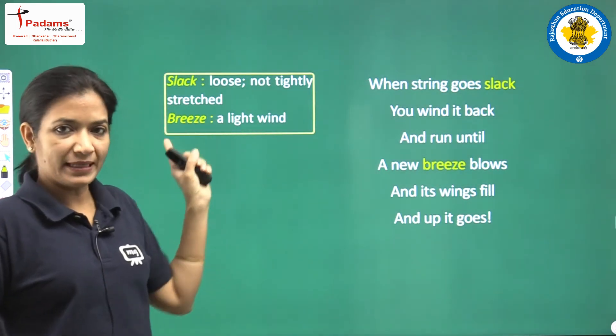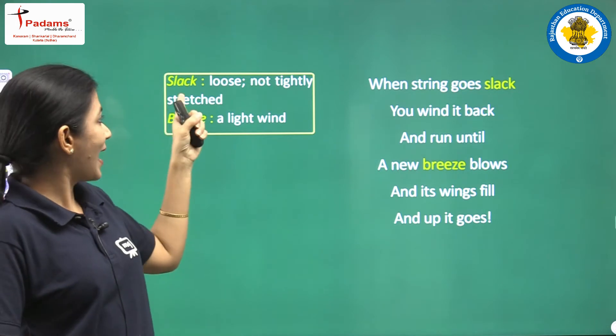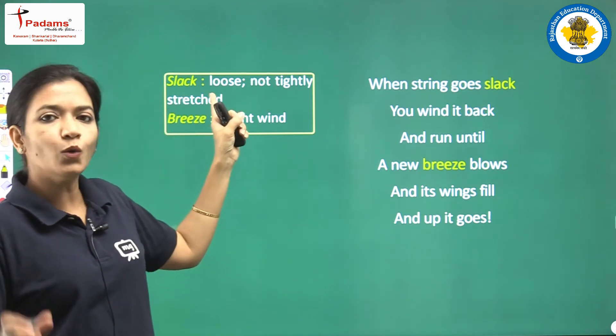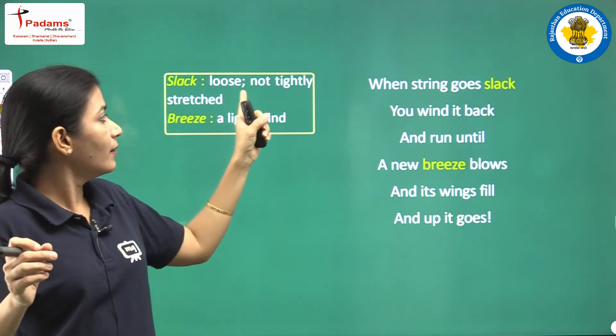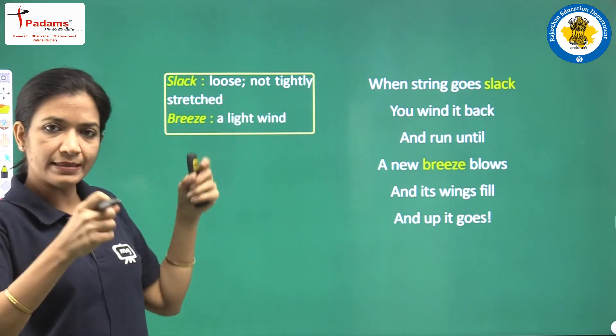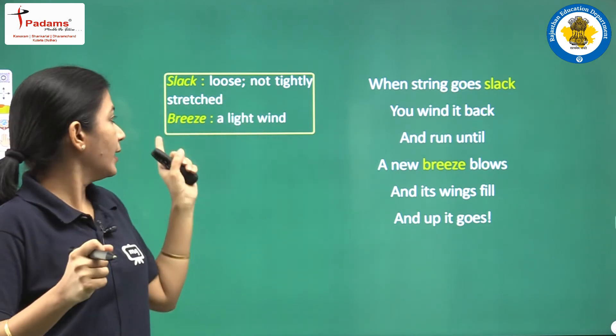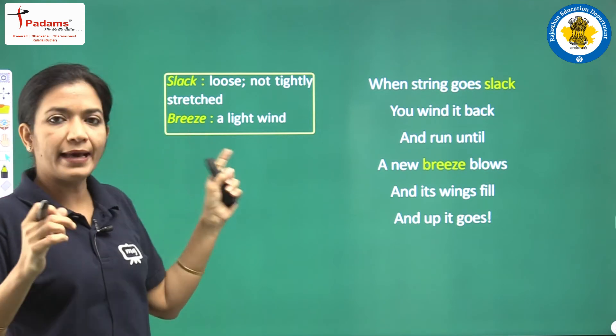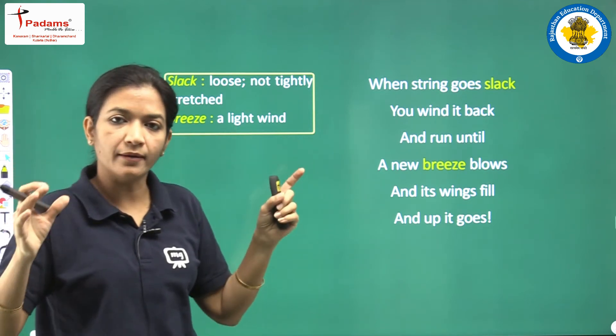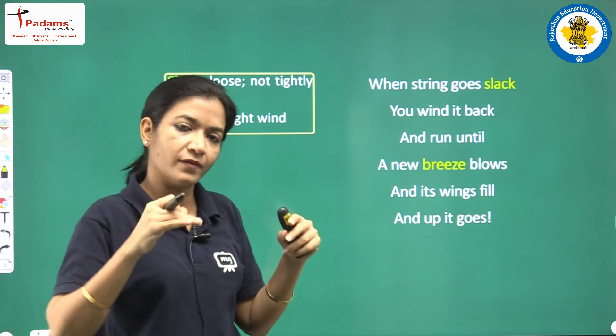We will start with the meanings first. Slack — loose, not tightly stretched. Breeze — a light wind.